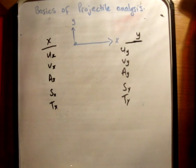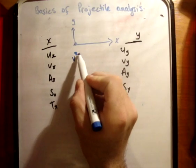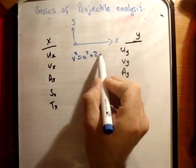So, in our constant acceleration questions in chapter 2, we had the UVAST formula.